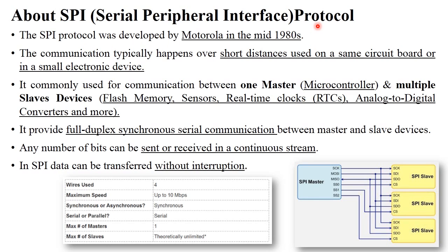SPI stands for Serial Peripheral Interface protocol. This SPI protocol was developed by Motorola in the mid 1980s. This protocol is generally used for short distance purposes. Suppose there is one circuit board and there are multiple devices like microcontroller, LED, LCD, memory chip, and analog to digital converter. All these devices are placed on the same circuit board, and for communication purpose, SPI protocol is used. It is commonly used for communication between master and all the slave devices.